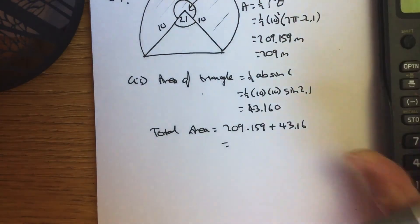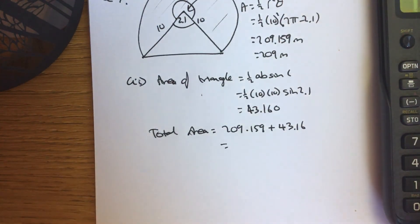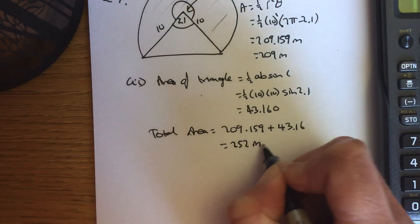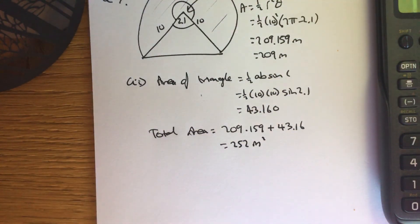Giving you an answer here. 209.159 plus 43.16. 252 metres squared to three significant figures. That's a good example of course.